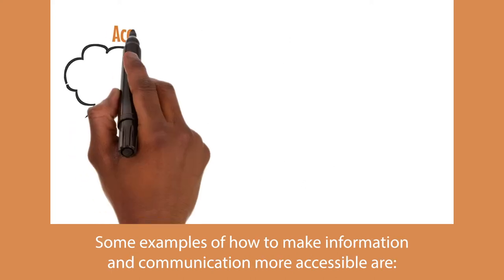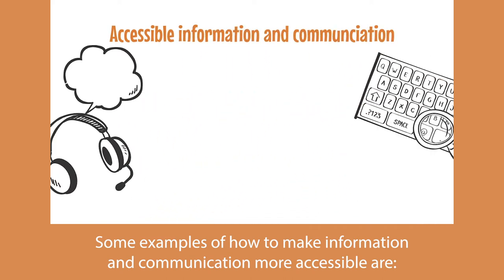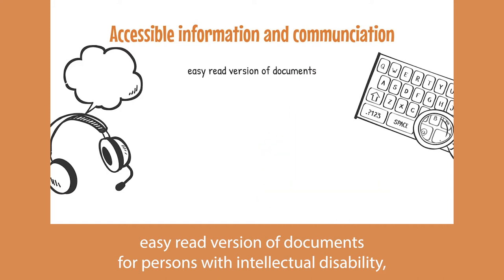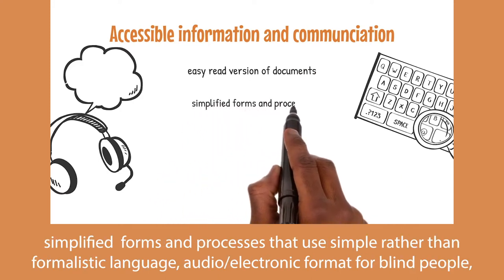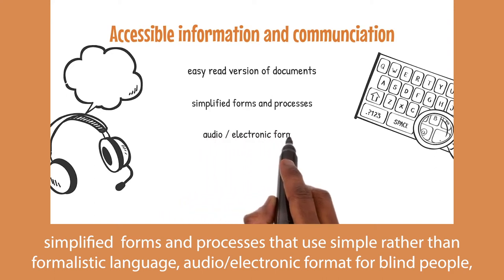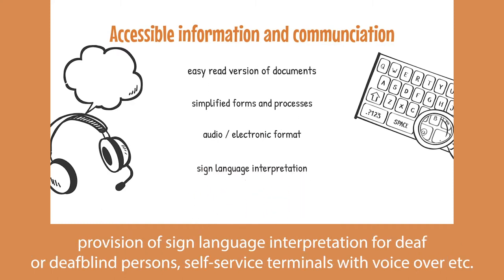Some examples of how to make information and communication more accessible are: easy-read versions of documents for persons with intellectual disability, simplified forms and processes that use simple rather than formalistic language, audio or electronic format for blind people, provision of sign language interpreters for deaf or deaf-blind persons, and self-service terminals with voice-over, etc.